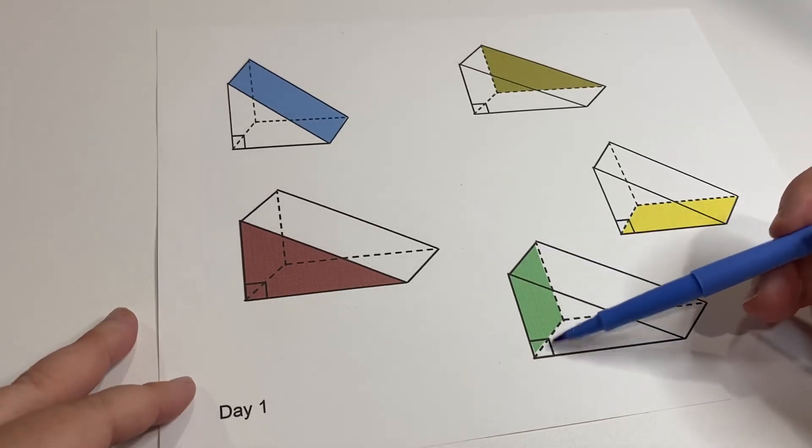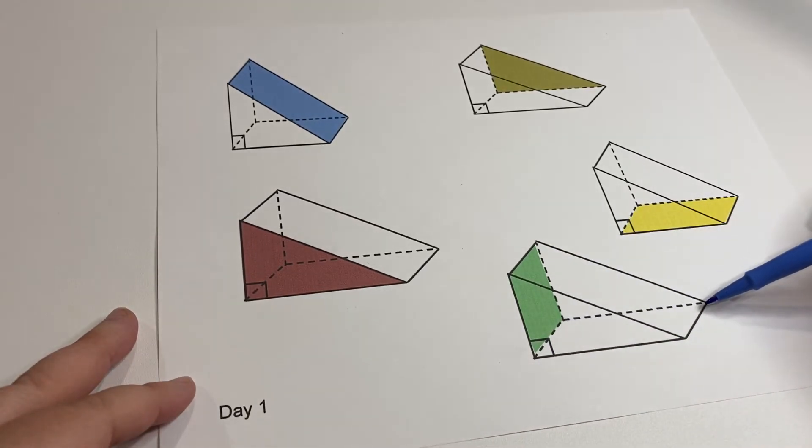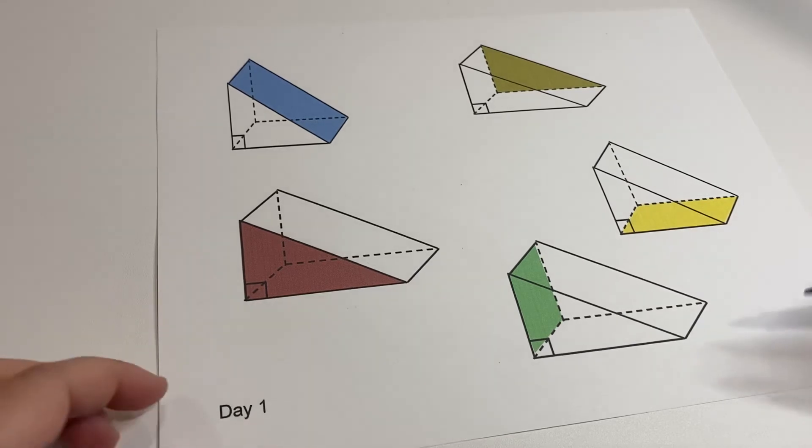These dotted lines are showing you, in real life, if you were looking at this, you wouldn't be able to see through it, right? You can't, well, unless you have superpowers or something.